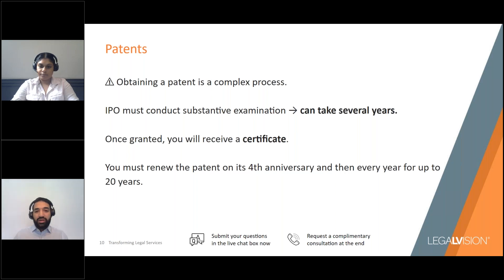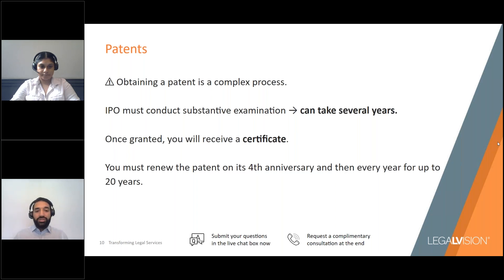To establish infringement, you must demonstrate that the invention is protected by a patent or that you have an application for it, and that the infringing party's activities fall within the legal definition of infringement under the Patents Act 1977, while considering any available defences. It is always wise to write to the third party first and seek an amicable resolution, because litigation costs a lot of money and time. Sometimes a letter simply setting out the alleged infringement and the steps required of the third party will prevent litigation. But if that's not successful, litigation remains an option.